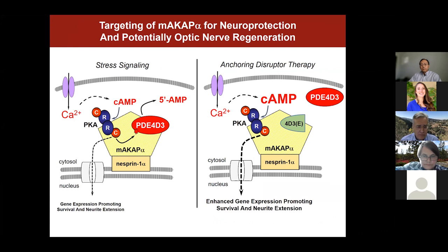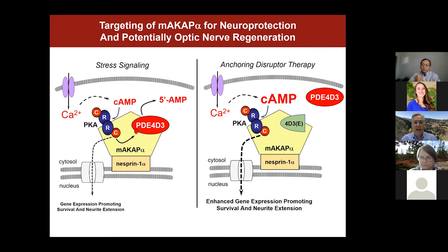In summary, consistent with data originally generated by Ben Barris and others, cyclic AMP signaling that activates protein kinase A requires organization of a signalsome at the nuclear envelope of retinal ganglion cells, organized by the scaffold MAKA-cap alpha. This promotes gene expression supporting cell survival and neurite outgrowth during stress. By understanding the biochemistry and wiring of these signal zones, we developed a novel therapeutic approach — displacing the phosphodiesterase to enhance cyclic AMP at the complex and potentiate neuroprotective gene expression.